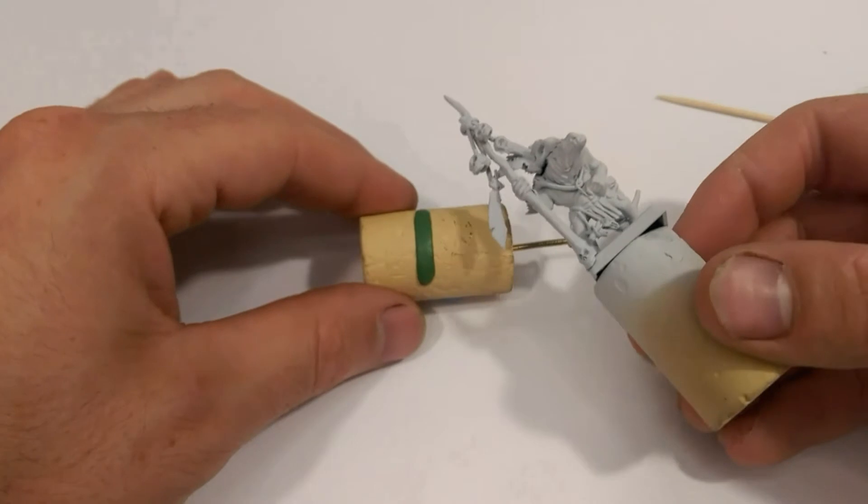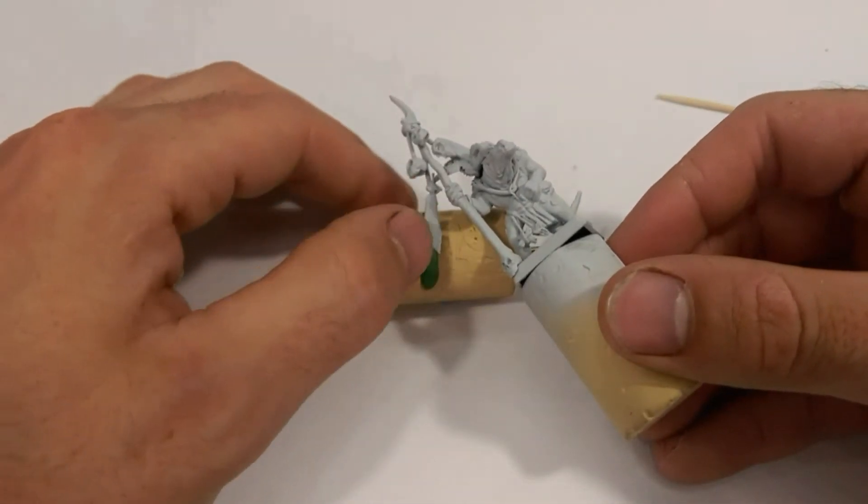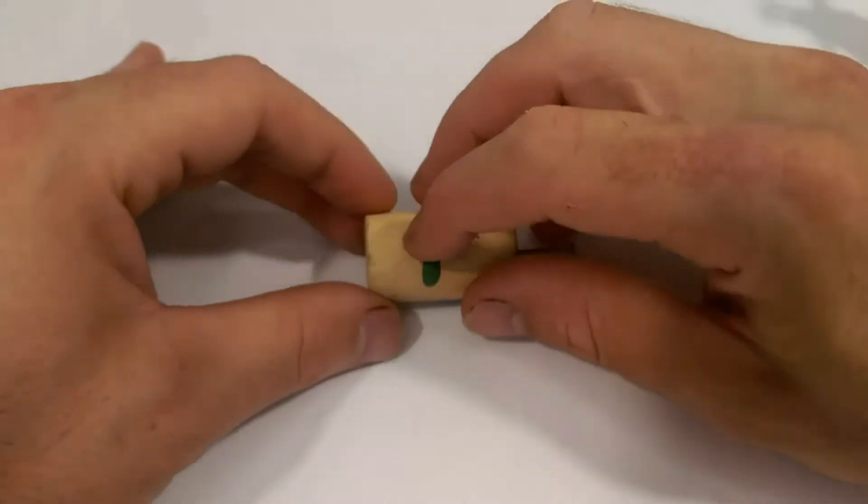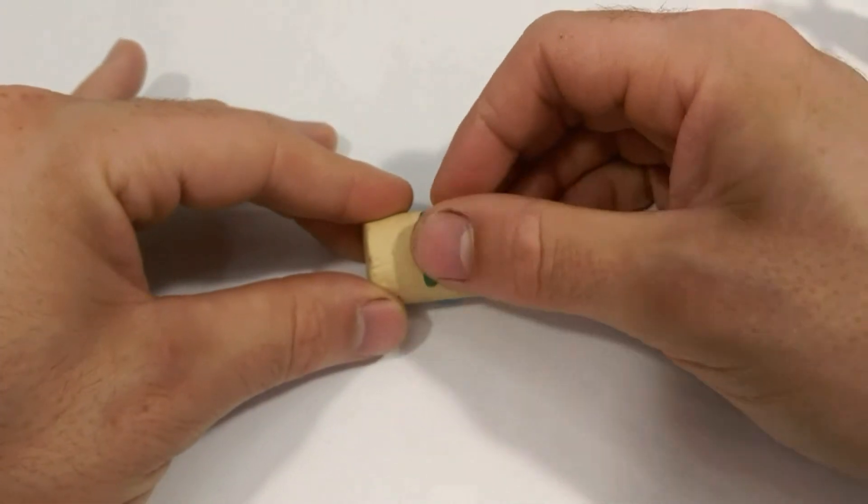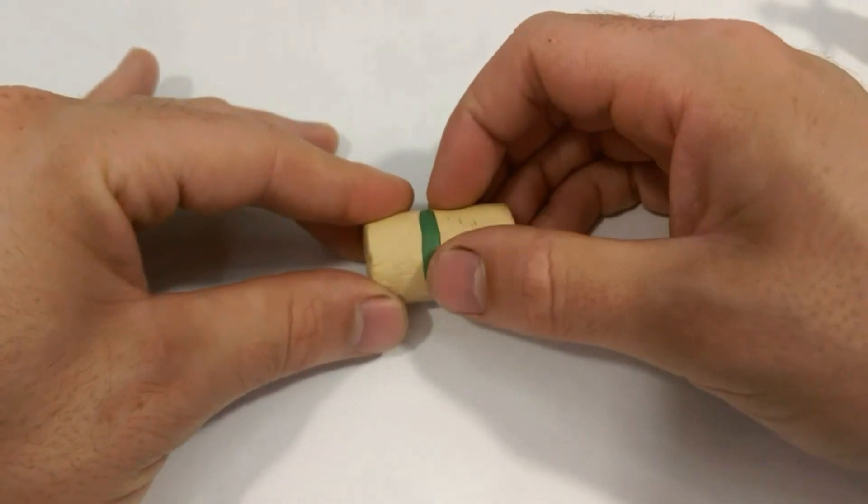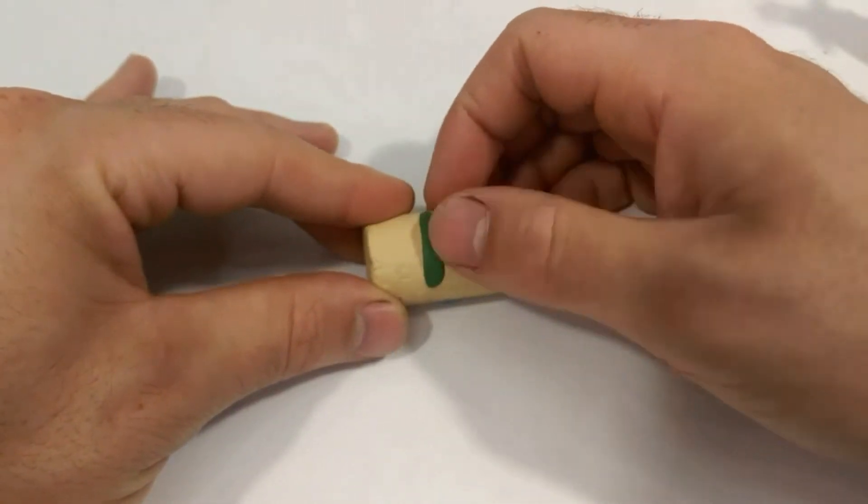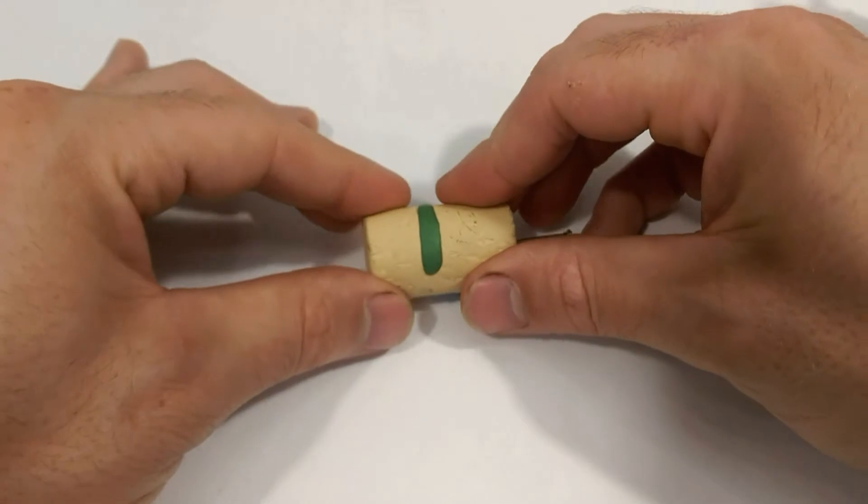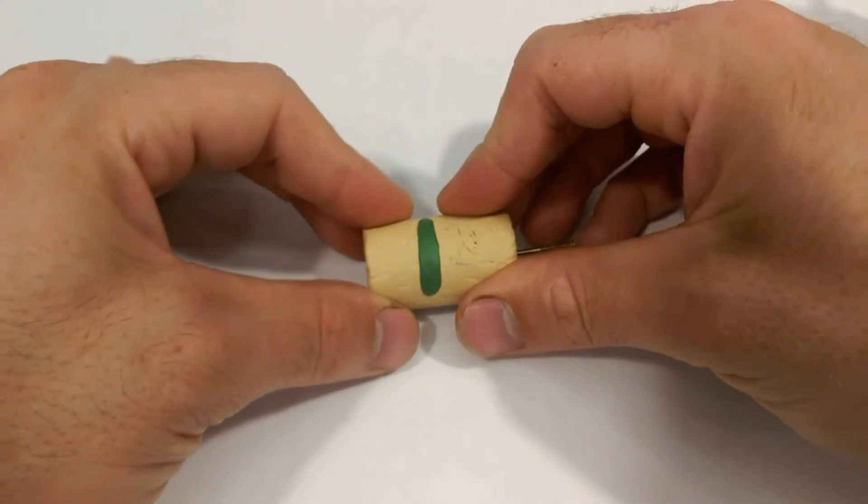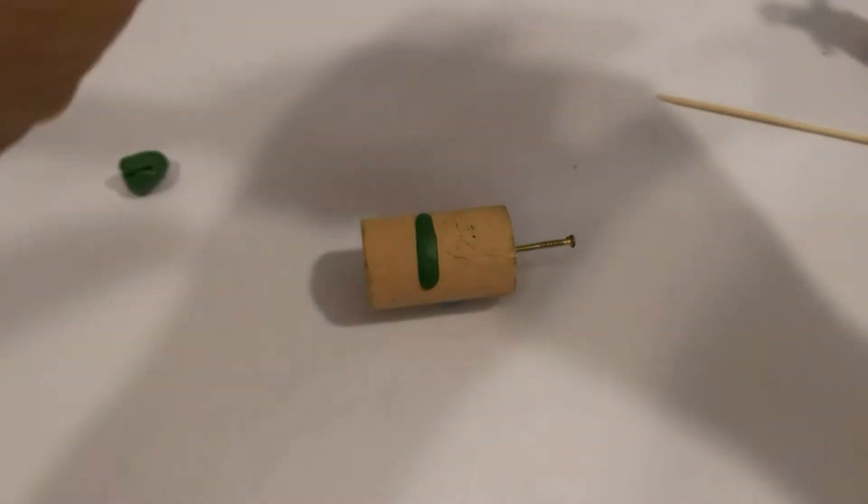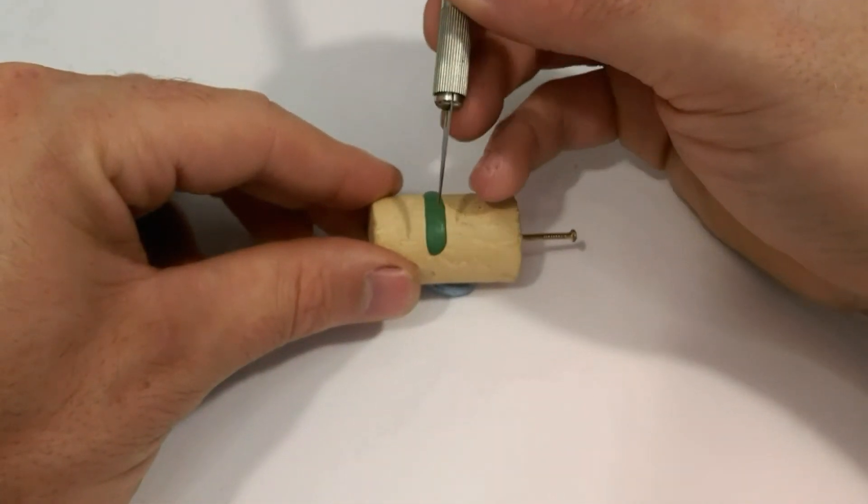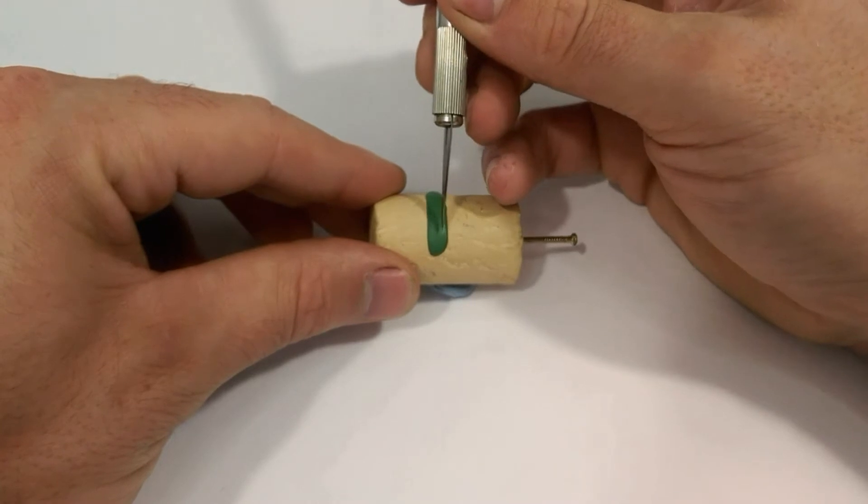I'm going to start by giving it a bit more shape up one end than the other. Just flatten it out a little bit so that you've got nice flat edges and something to work with. What you should be able to do is find your centre line.